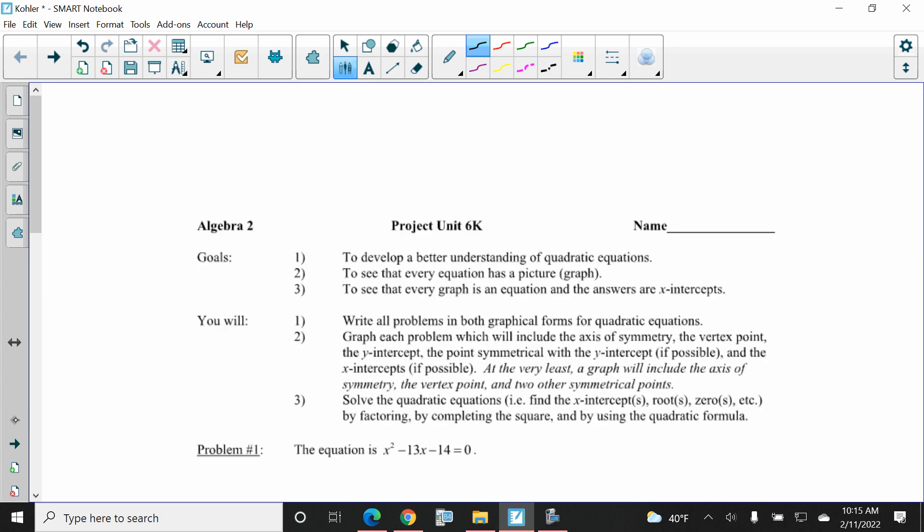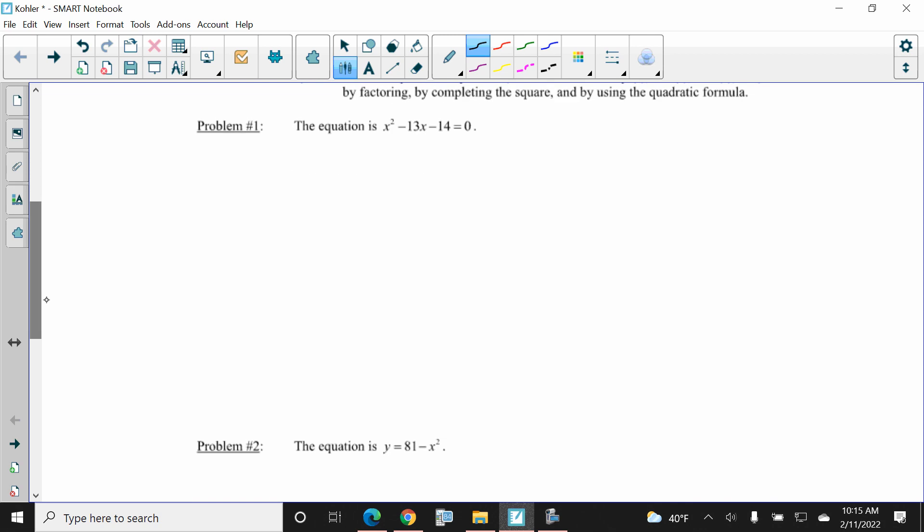So here's our problems. You're going to be given a situation. First situation is the easiest. Second situation, it gets a little harder, so on and so forth. So number one, it's actually almost in standard form. So I'm just going to write y equals x squared minus 13x minus 14. There it is, standard form, finished.